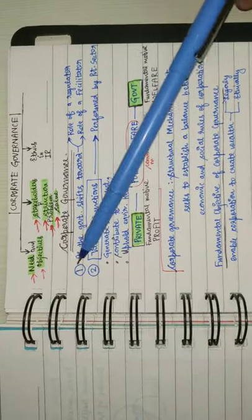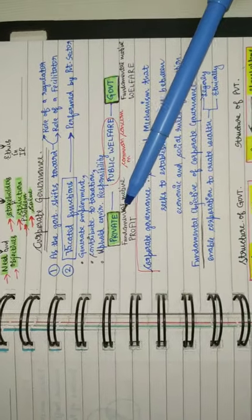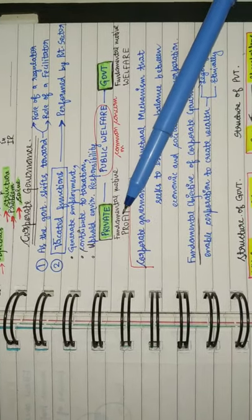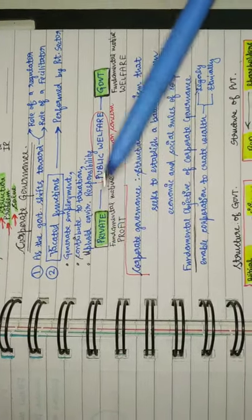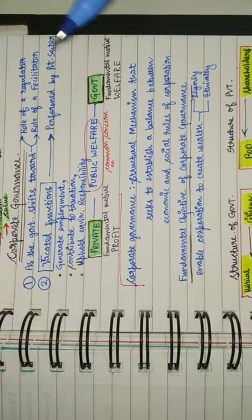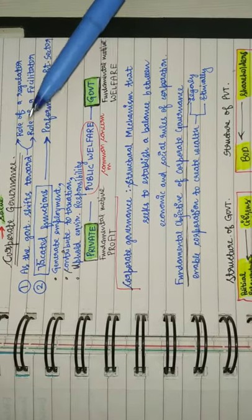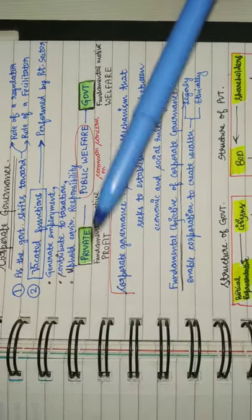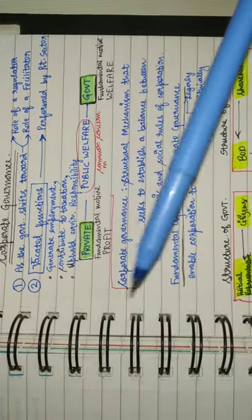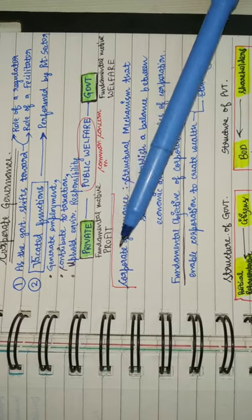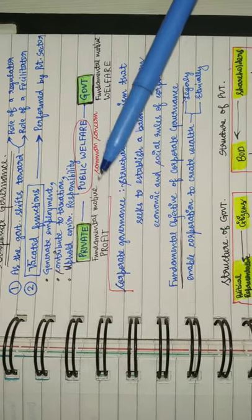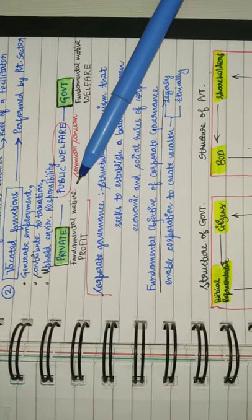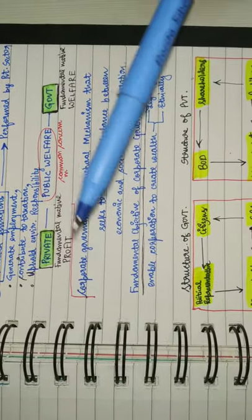Corporate governance is what we were discussing - how the fundamental motive of profit of a private enterprise and fundamental motive of welfare of government are at loggerheads, but public welfare is a common concern. How to ensure and uphold public welfare while creating wealth legally and ethically?